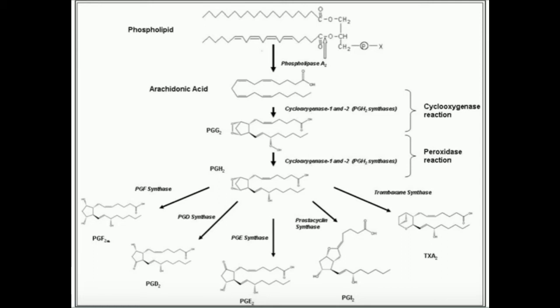You see these two reactions right here. There's a cyclooxygenase reaction and a peroxidase reaction. Technically, these are both cyclooxygenase reactions. Cyclooxygenase itself has two activities. An actual cyclooxygenase activity that gives it its name, and then a peroxidase activity. So arachidonic acid is going to react with cyclooxygenase.